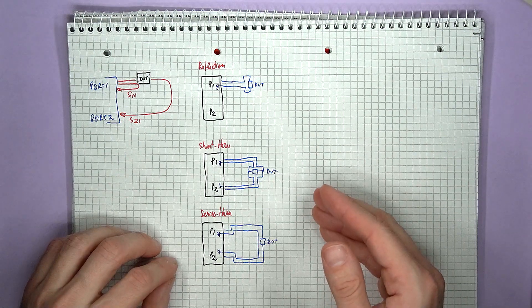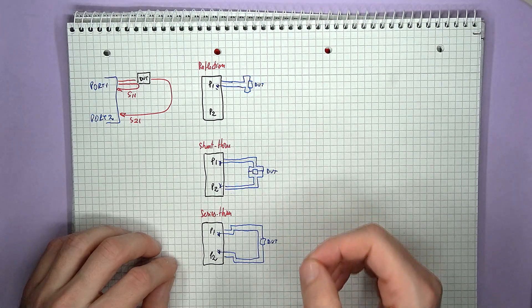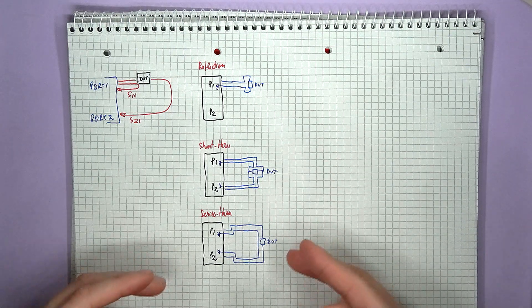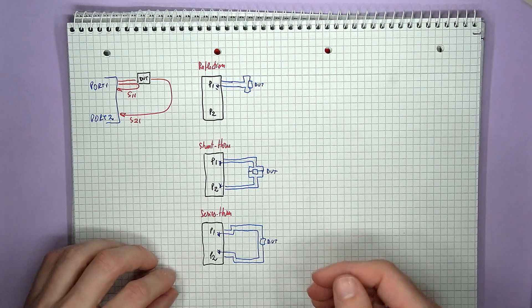and then you have the two-port measurements, where the tested circuit is either shunted in between the signal line and the ground, the shunt through setup, or the test component is placed in series in between the two ports, the series through setup.